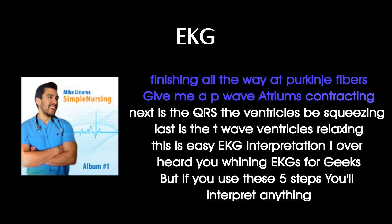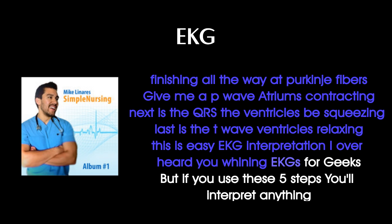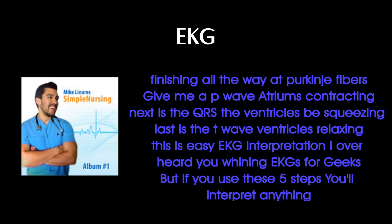Here's the P wave — atria contracting. Next is the QRS, ventricles squeezing. Last is the T wave, ventricles relaxing. This is your EKG interpretation. I overheard you whining about EKGs for weeks, but if you use these five steps, you'll interpret anything.